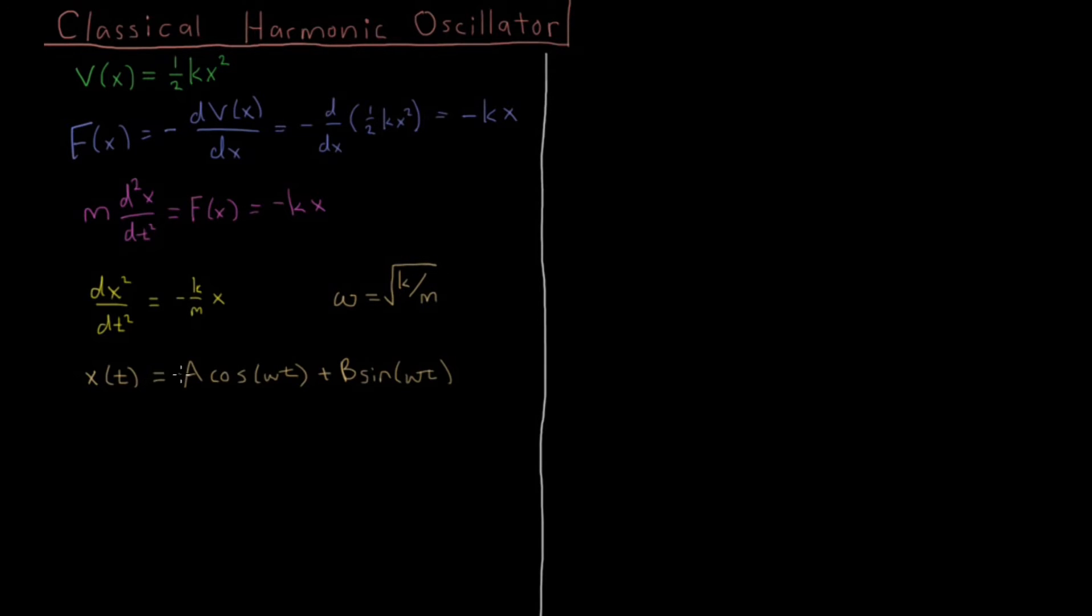If you differentiate this equation twice with respect to time, you will get minus omega squared times the original function back. So setting omega equal to the square root of k over m gives us back our original equation, showing it is a valid solution.